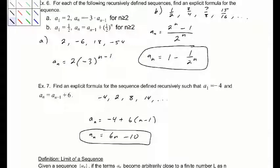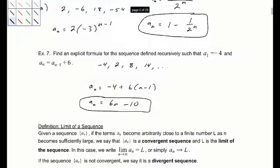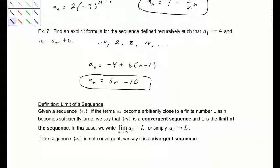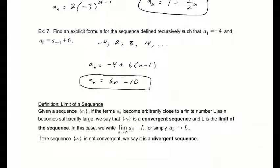Next we have the idea of a limit of a sequence. Given a sequence a sub n, if the terms become arbitrarily close to a finite number l as n becomes sufficiently large, we say that a sub n is a convergent sequence and l is the limit of that sequence. We write the limit as n goes to infinity of a sub n equals l, or simply a sub n converges to l. If it does not converge, it is a divergent sequence.